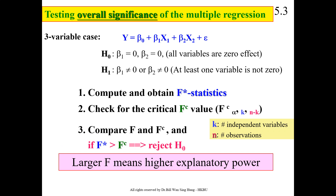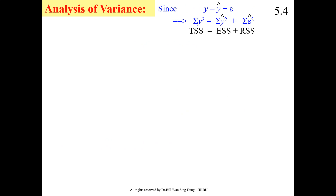A larger F means higher explanatory power. If the computed value of F is higher, the overall explanatory power of the model is greater. The F-test is a joint test — it is not used for the significance of an individual coefficient, but for the overall model, the overall equation, or the overall significance of the function.